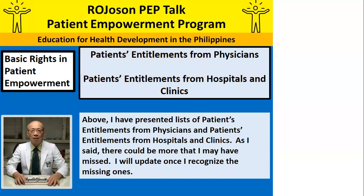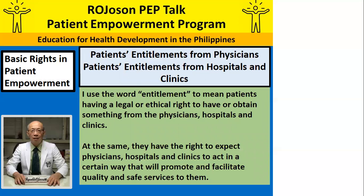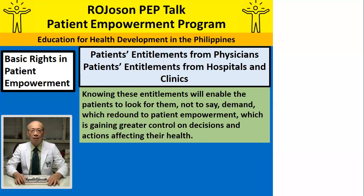Above, I have presented the list of patients' entitlements from physicians and also patients' entitlements from hospitals and clinics. As I said, there could be more that I may have missed, and I will update once I recognize the missing ones. I use the word entitlement to mean patients having a legal or ethical right to have or obtain something from the physicians, hospitals, and clinics. At the same time, they have the right to expect physicians, hospitals, and clinics to act in a certain way that will promote and facilitate quality and safe services to them. Knowing these entitlements will enable patients to look for them — not to say demand — which redounds to patient empowerment, which is gaining greater control on decisions and actions affecting their health.